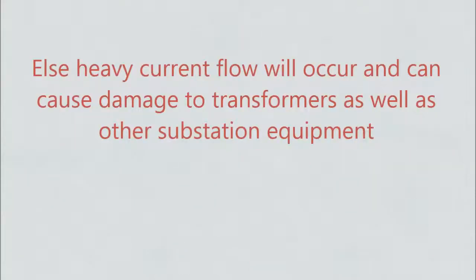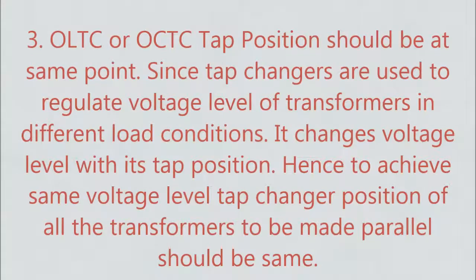Otherwise, heavy current flow will occur and can cause damage to transformers as well as other substation equipment. The third condition is that the OLTC or OCTC tap position should be at the same point. Tap changers are used to regulate the voltage level of transformers in different load conditions — they change the voltage level with their tap position. Hence, to achieve the same voltage level, the tap changer position of all transformers to be paralleled should be the same.